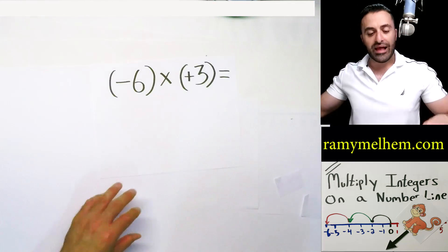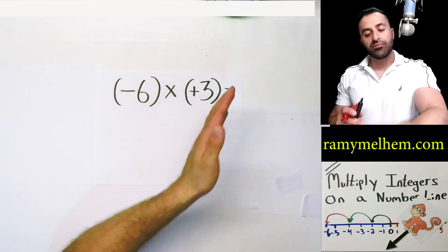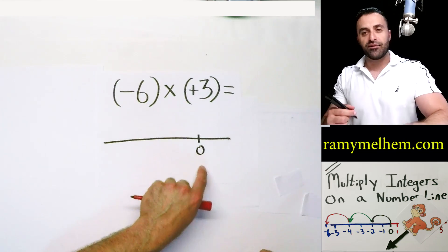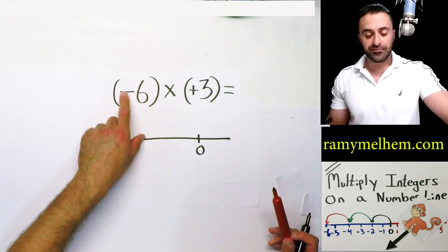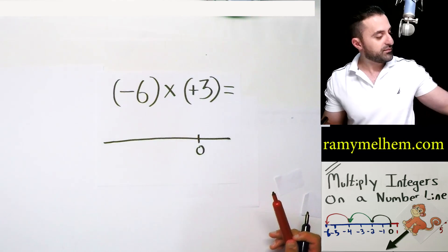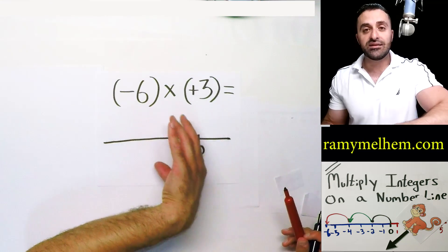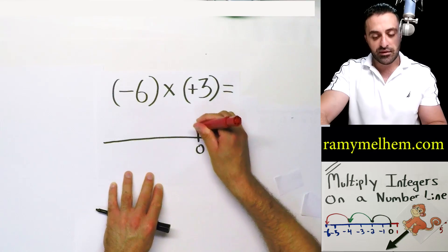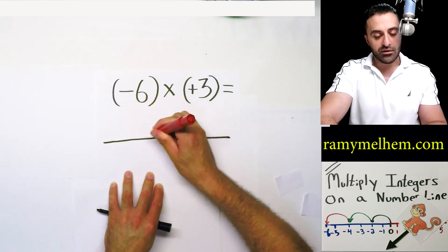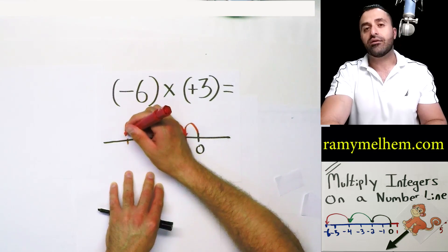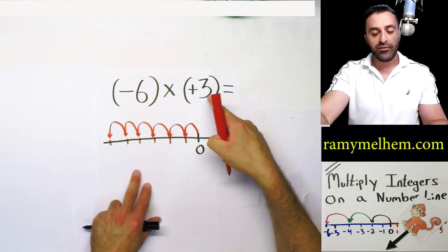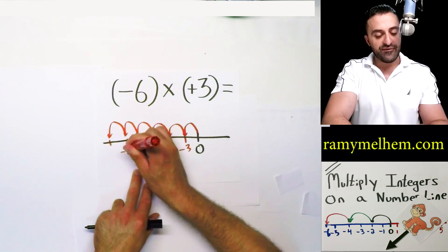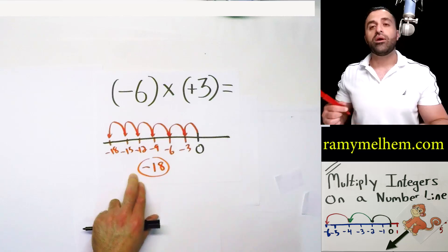Last question — negative six multiplied by positive three. Draw your number line, put your zero down. You'll see why I put it so far on this side — it's because I know which way the monkey is going to be jumping. He's got to face left, then go forward. If the monkey's facing left and jumps forward, he's going this way — six hops of three that way. Make your six hops: one, two, three, four, five, six. Put your numbers down, three under each hop. Going this way it's negative three, negative six, negative nine, negative twelve, negative fifteen, and negative eighteen is our answer.